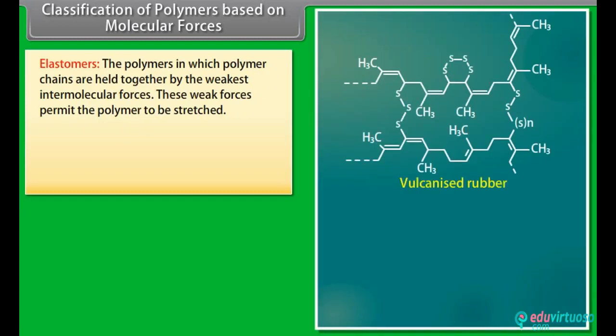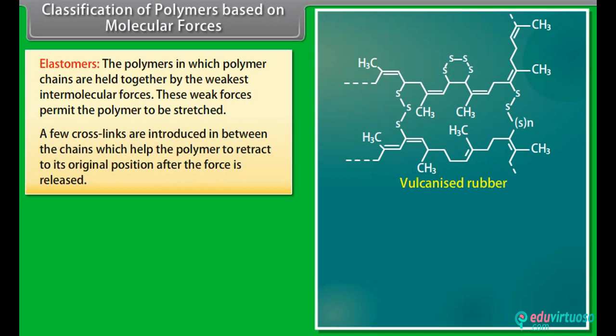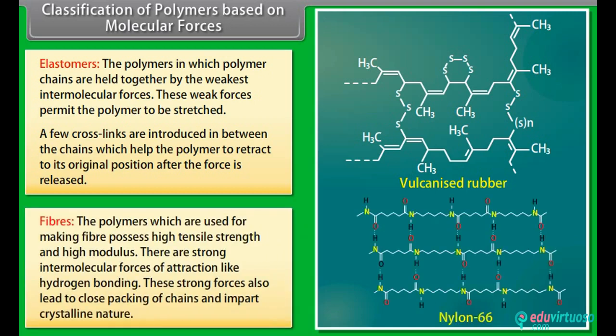Classification of polymers based on molecular forces: under this type of classification, there are four subcategories. Elastomers: the polymers in which polymer chains are held together by the weakest intermolecular forces. These weak forces permit the polymer to be stretched. A few crosslinks are introduced in between the chains which help the polymer to retract to its original position after the force is released. For example, vulcanized rubber. Fibers: the polymers which are used for making fiber possess high tensile strength and high modulus. There are strong intermolecular forces of attraction like hydrogen bonding, which also lead to close packing of chains and impart crystalline nature.